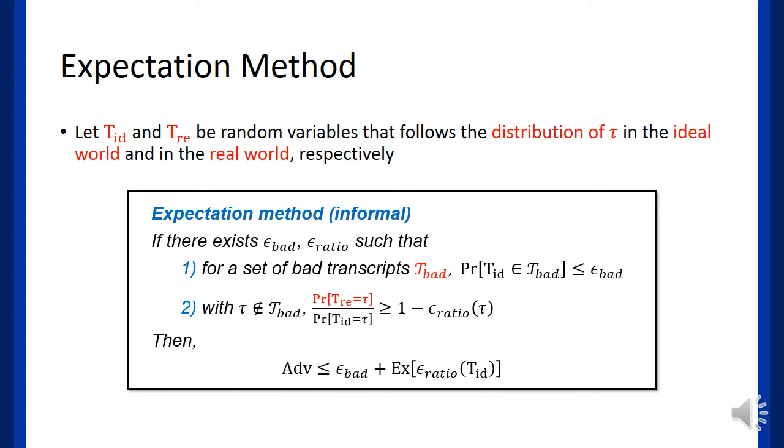We use the expectation method, which can be viewed as a generalization of Patarin's coefficient H technique, which upper bounds the distinguishing advantage. Let p_id and p_re be the probability distribution of a transcript tau in the ideal world and the real world respectively. Then informally, the expectation method tells us if the probability to have a bad transcript is small in the ideal world, and the ratio of ideal world and real world is expected to be close to 1, one cannot distinguish the two worlds.